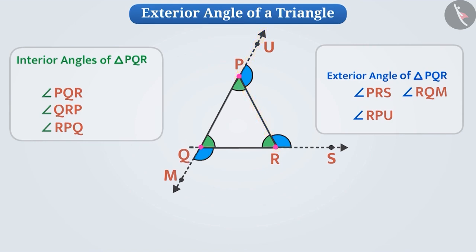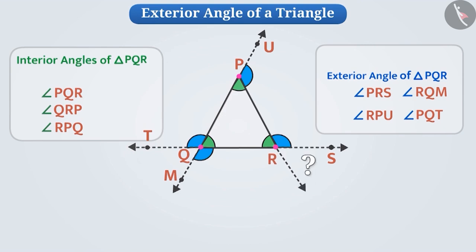If we extend side QR towards the left, we get an exterior angle PQT formed at vertex Q. Now you may pause the video and try to find the exterior angle by extending side PR.